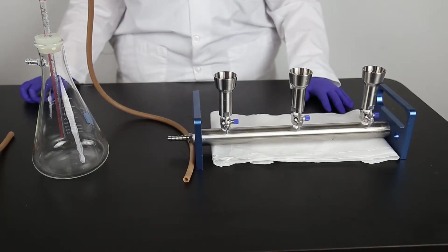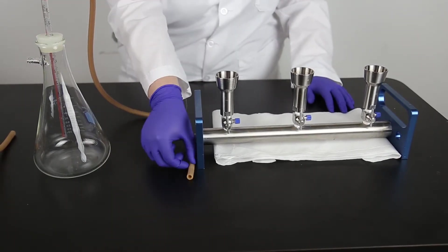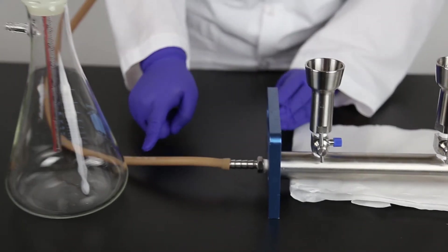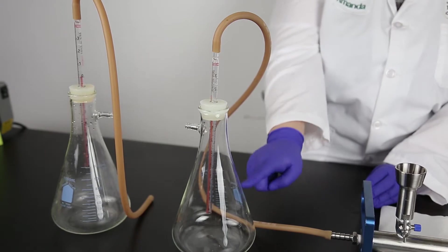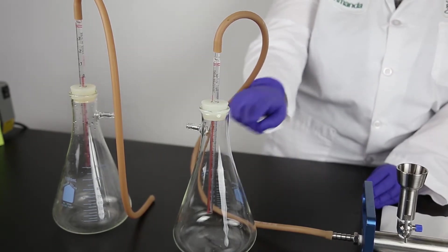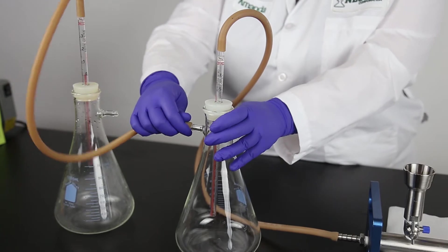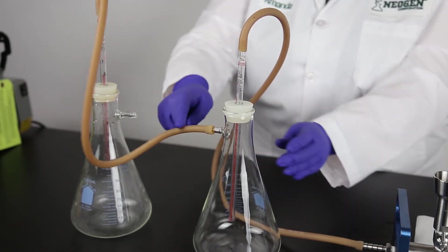Set your clean manifold in the center of your workspace. Use the filtration connectors to attach a minimum of two sidearm filtration flasks in tandem with the vacuum pump. Always use an additional sidearm flask to prevent water from getting into the vacuum pump.